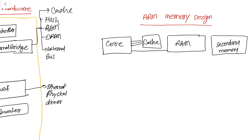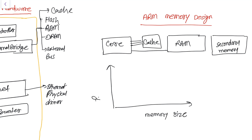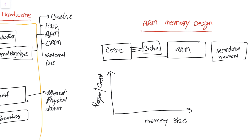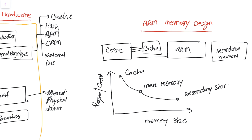Regarding the storage trade-off: in general, memory that is nearby the core is more costly than memory that is far away. If we plot memory size against performance and cost, we get first cache memory, then main memory which includes flash, and then secondary storage.